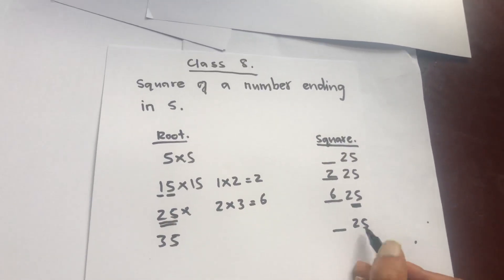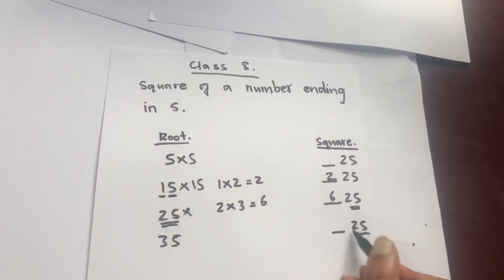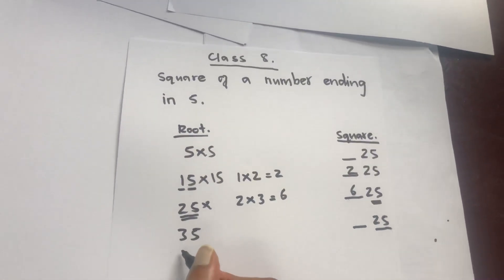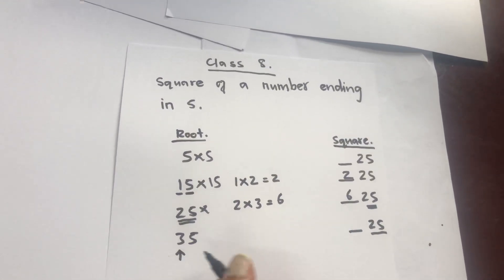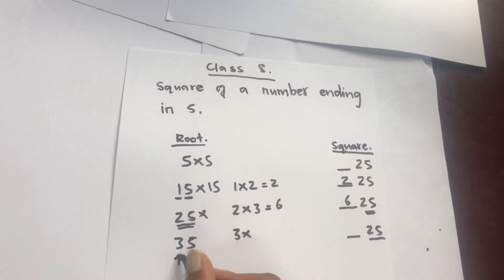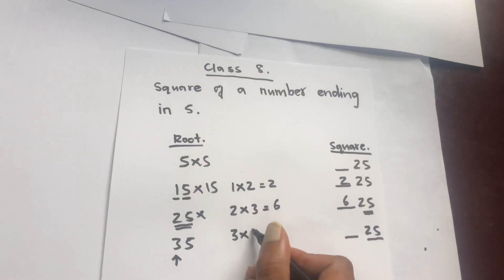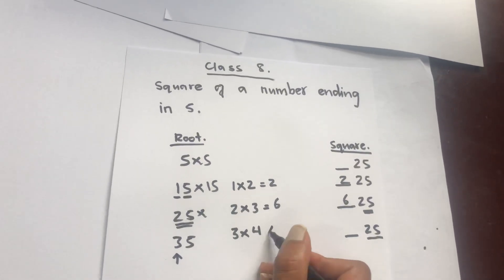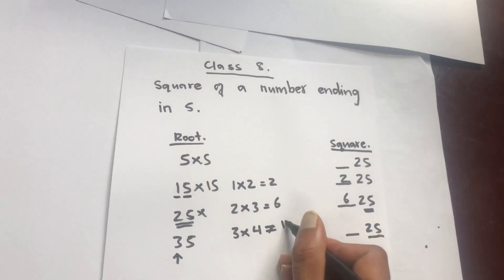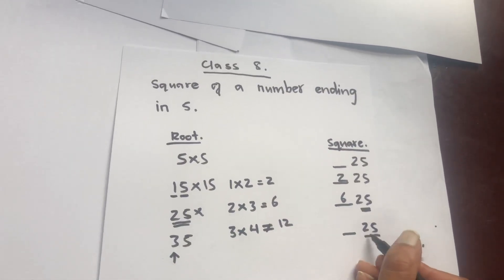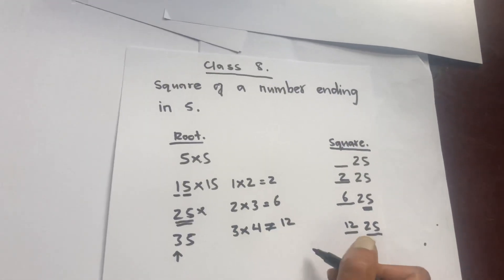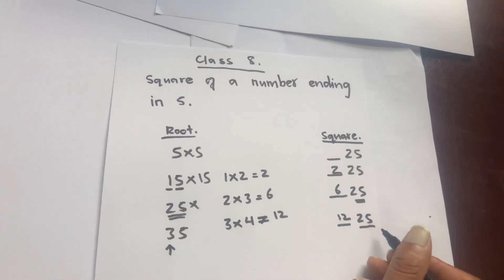Similarly, for 35: the last two digits are 25. Now look at the digit in front of 5, which is 3. Multiply 3 by one greater than 3, that is 4: 3 into 4 equals 12. So the number in front of 25 is 12, and 35 squared is 1225.